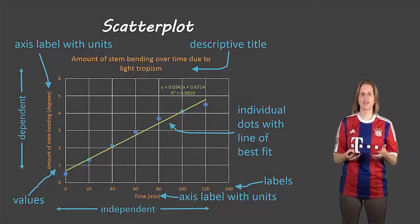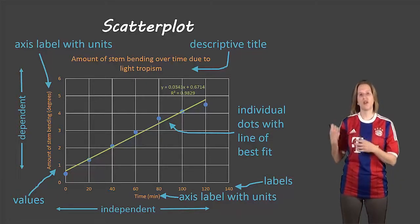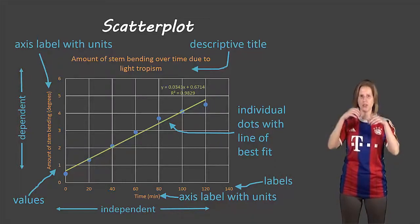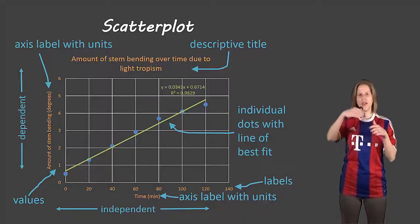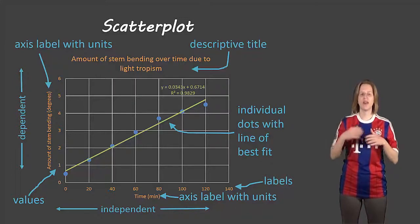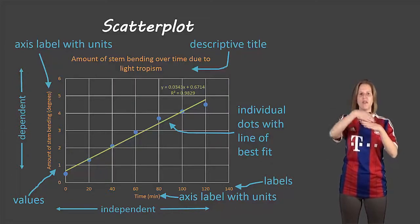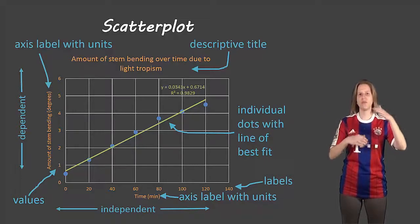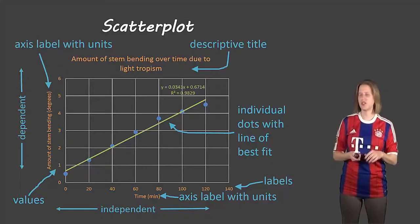So if you're using a graphing software on the computer, it will draw the line for you. If you're doing it by hand, use a clear ruler so that you can see through it and try a few variations until you get one that seems to have the best amount of points going through and the same number above and below and the same distance above and below.